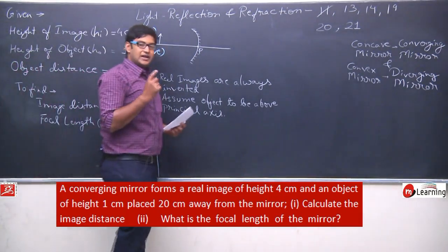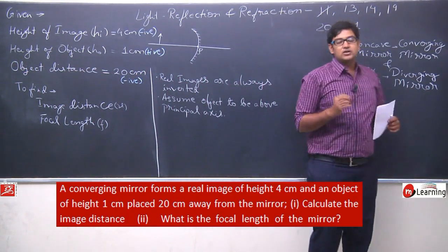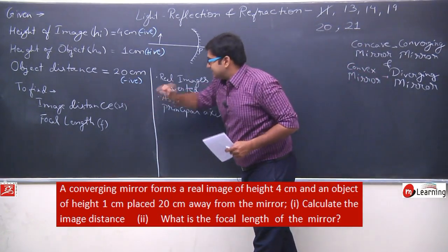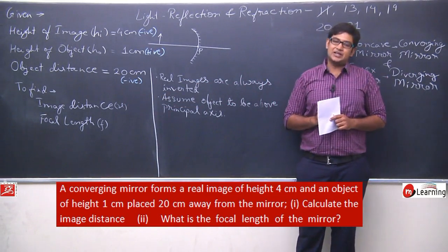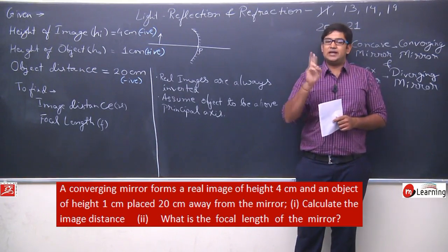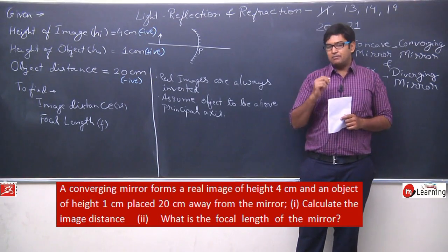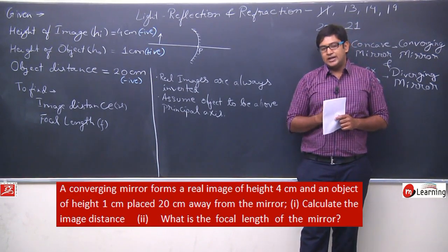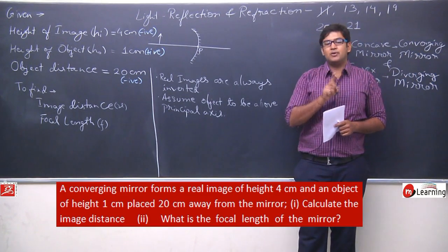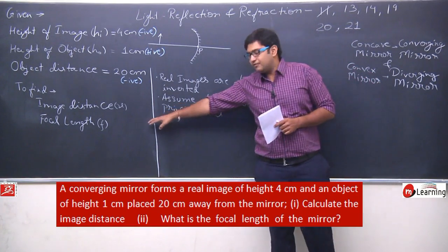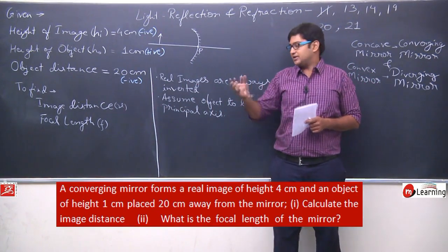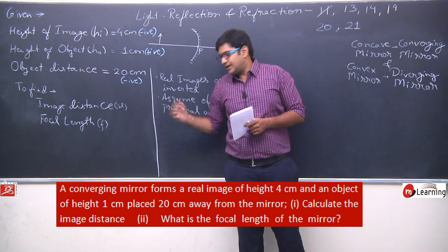We need to find the image distance. To find image distance, we can either apply the mirror formula or the magnification formula. Can we apply the mirror formula here? The mirror formula says: 1/f = 1/u + 1/v. But focal length is not given here, and without focal length we cannot use the mirror formula directly. So we must apply the magnification formula.